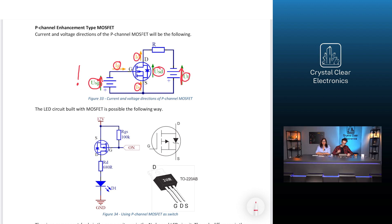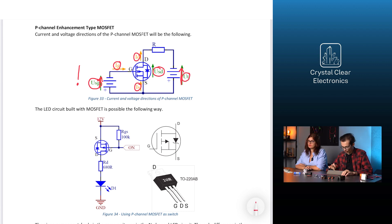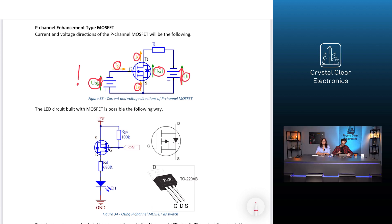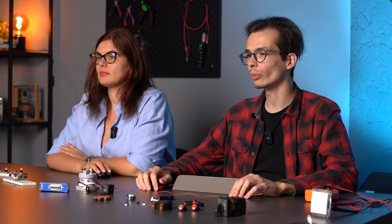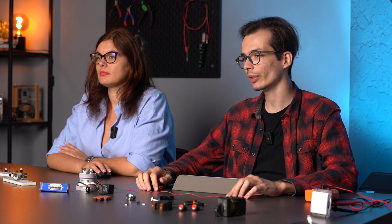The LED circuit built with MOSFET is possible the following way. On the right, you can see the pinout of the transistor. The given component's role is the same as it was in the N-channel LED circuit. The only difference is the RGS resistor, which now acts as a pull-up resistor. The pull-up resistor connects a certain terminal to a higher voltage point, as its name suggests. Similarly to the pull-down resistor, the input of the controller is on a defined potential all the time.